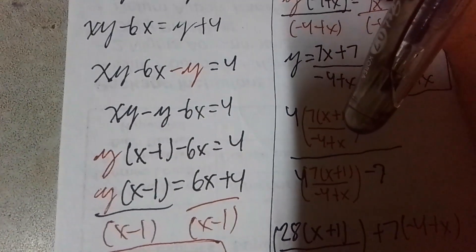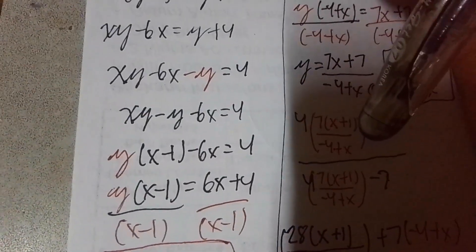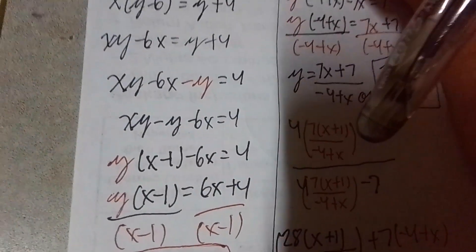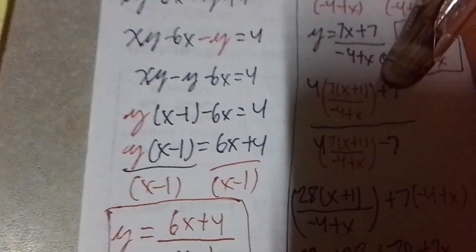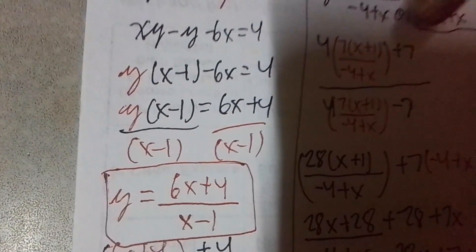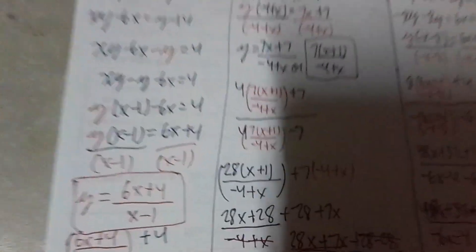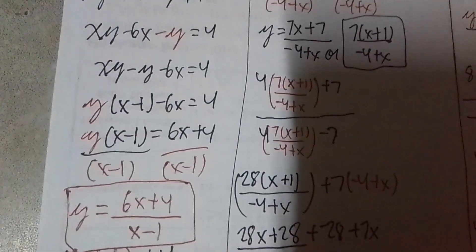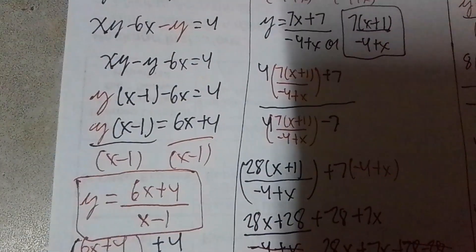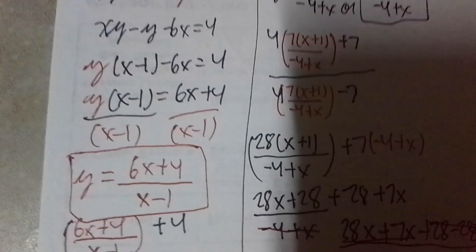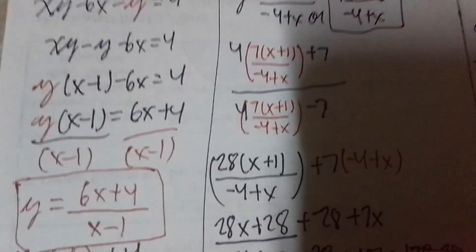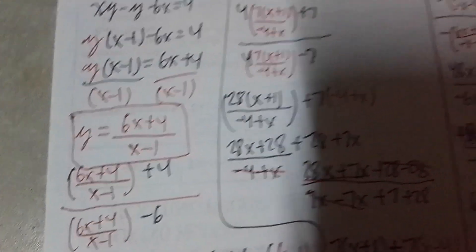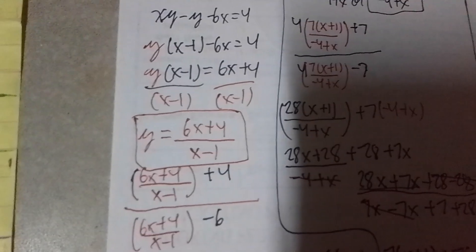Divide both sides of the equation by x minus 1, and we get the answer: the inverse function is 6x plus 4 divided by x minus 1. Now, to verify both of them are inverses — here's the solution sheet that I made.